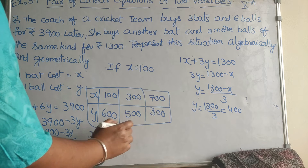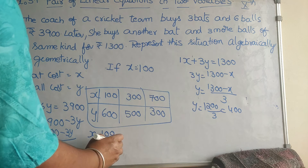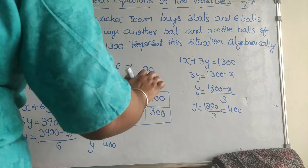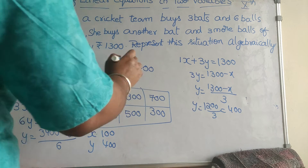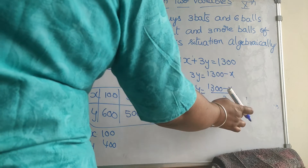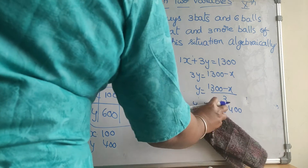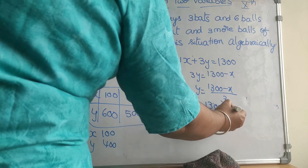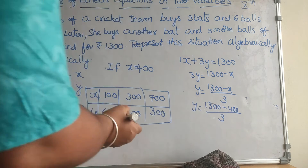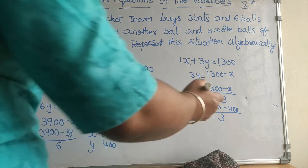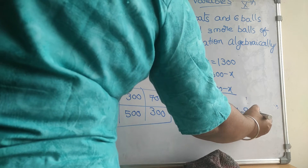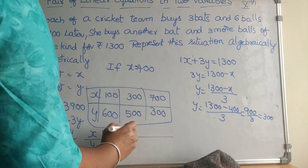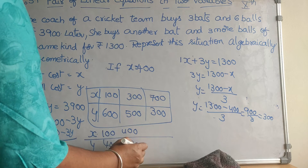If x = 400, then y = (1300 − 400) / 3 = 900 / 3 = 300. So when x is 400, y is 300.